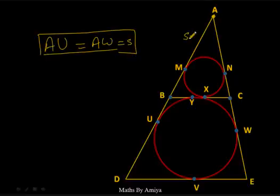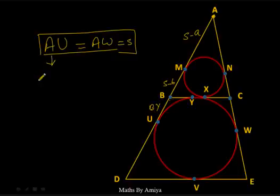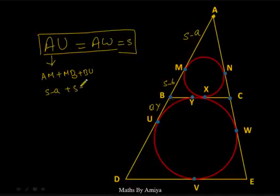From point A, we say AM is S − A (first concept) and MB is S − B (first concept). AU = AM + MB + BU. That is (S − A) + (S − B) + BY, where BY is a tangent from B to the bigger circle.